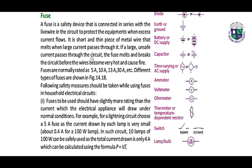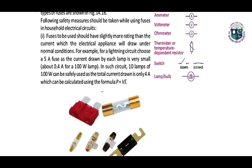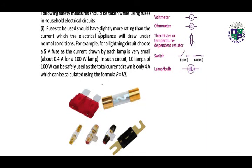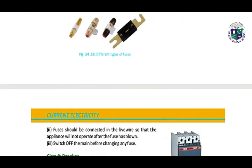If a large, unsafe current passes through the circuit, the fuse melts and breaks the circuit before the wires become very hot and cause fire. Fuses are normally rated as 5A, 10A, 13A, 30A — different types of fuses are shown in the figure. Fuses to be used should have slightly more rating than the current which the electrical appliances will draw under normal conditions. For a lighting circuit, choose a 5A fuse as the current drawn by each lamp is very small. In such circuits, 10 lamps of 100 watts can be safely used as the total current drawn is only 4A.